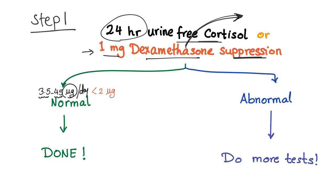Even if the patient has symptoms of Cushing syndrome — even if she is obese, has striae, buffalo hump, and moon faces — if either of these tests is normal, she does not have Cushing's. Look for something else. However, if either one is abnormal, we have to do more tests.